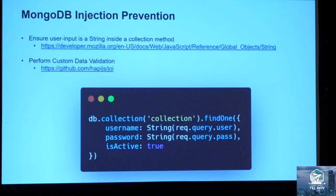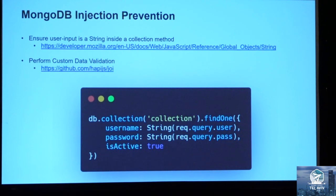The simplest way to prevent Mongo injection is to ensure what you are expecting is of a parsed string type — directly used in the global string object. Or you can perform custom data validation. One popular library from Hapi is Joi, where you can define custom input validation on particular user inputs or on a schema — specifying it must be a string, it must be required, it must be between 30 and 50 characters, whatever you need.